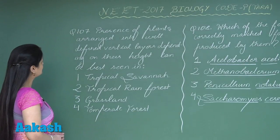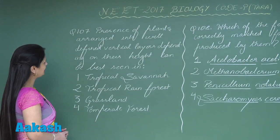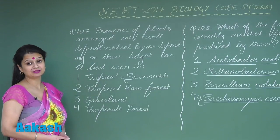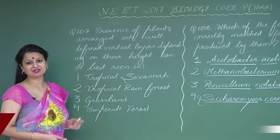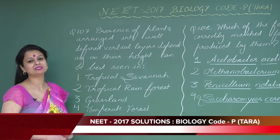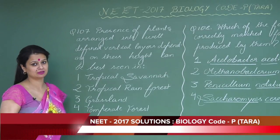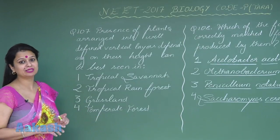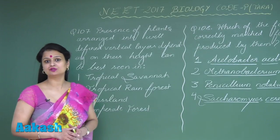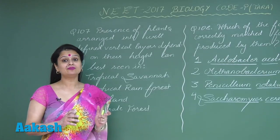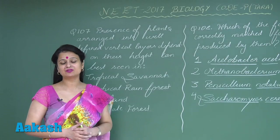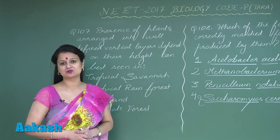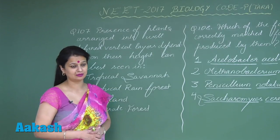In question number 107, we have to look for the option where stratification can be seen best. The best stratification can be seen in the tropical rainforest — in this forest, five to seven vertical strata are present.